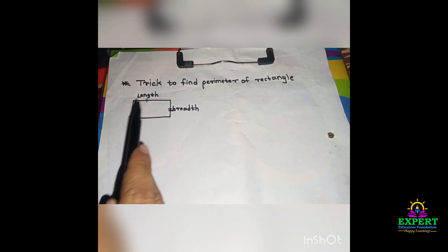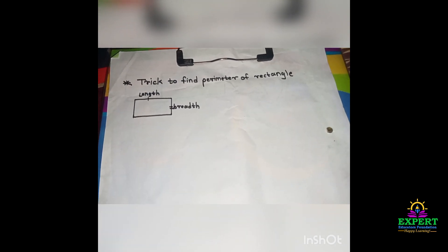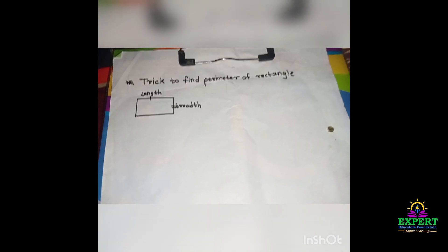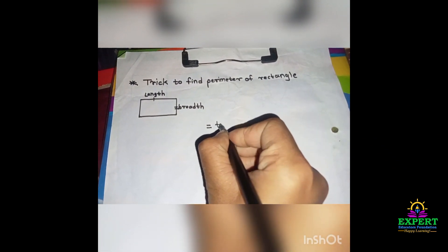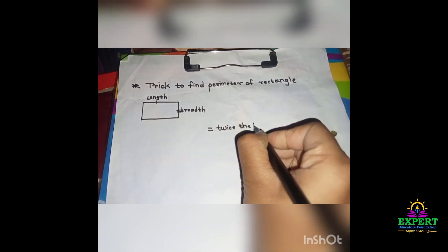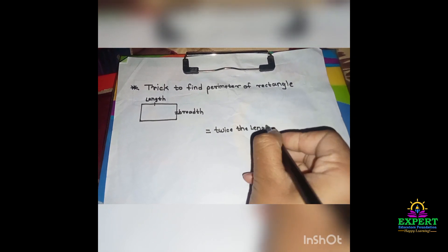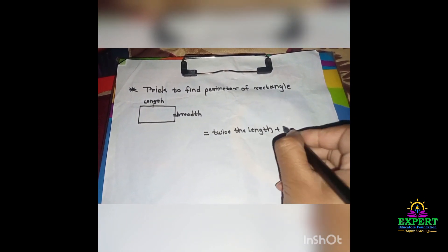The perimeter of a rectangle is equal to twice the length plus twice the breadth.